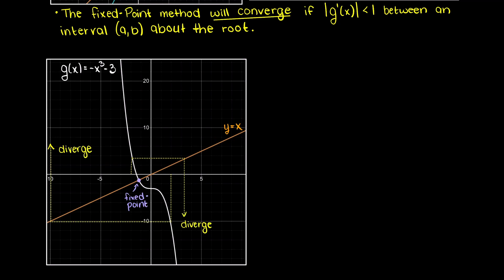Remember how when we were defining convergence, we stated that the statement had to be true within a given interval. Well, no matter how small our interval is, if the absolute value of the slope of the tangent at our fixed point is larger than 1, then our function can never converge as you can see here.